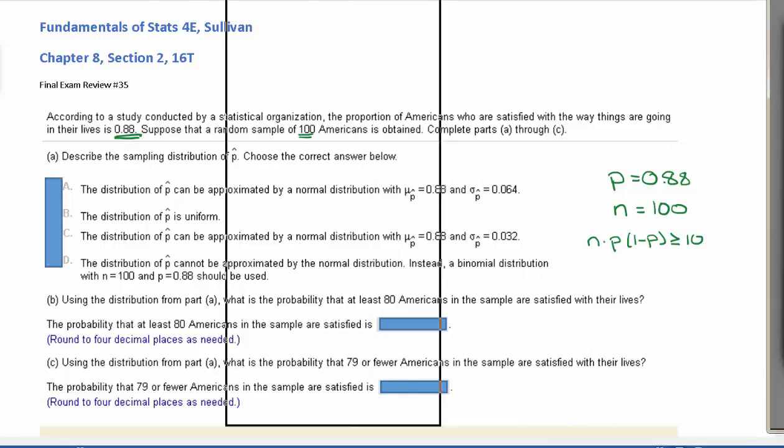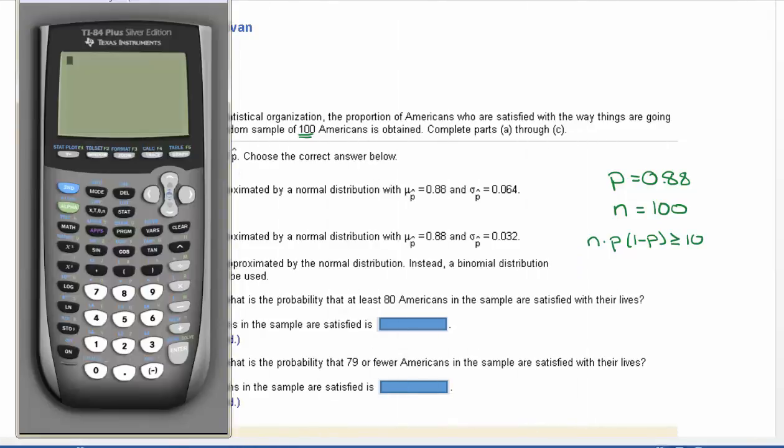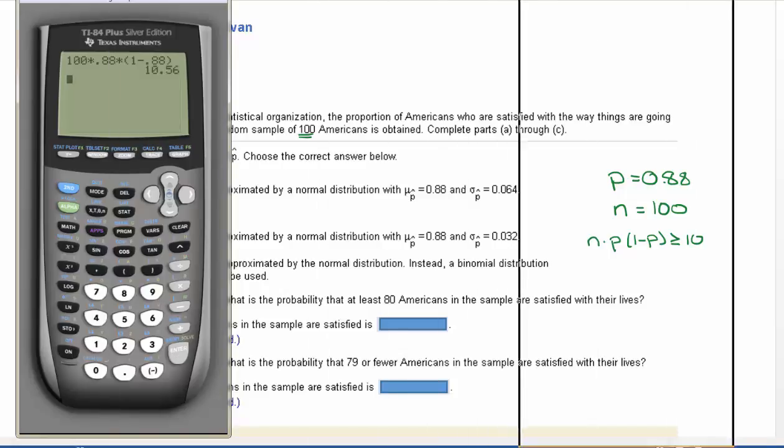So we use our calculator right quick. n is 100 times our p is 0.88, and we can type out 1 minus 0.88, but if you want to be a little quicker, you could just put in 0.12. We're getting 10.56, so indeed that's greater than or equal to 10. That will let us know that we can indeed use the normal distribution to approximate.